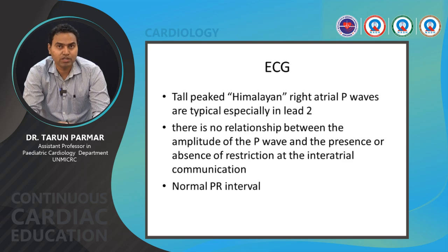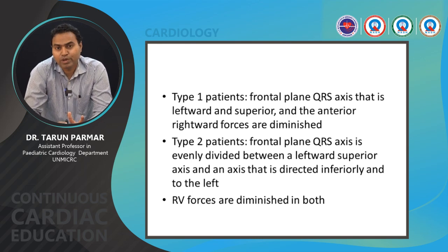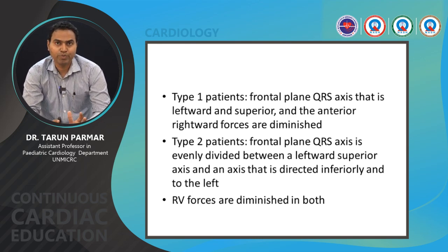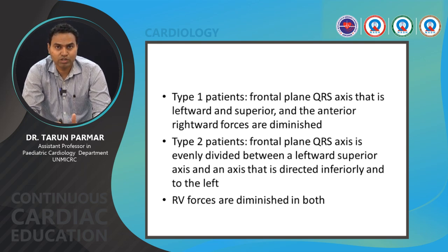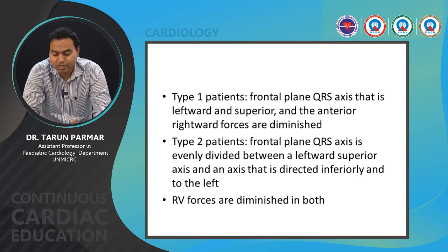On ECG, there are tall P waves (Himalayan P waves) seen mainly in lead II due to right atrial enlargement. There is no clear relationship between P-wave amplitude and the presence or absence of restriction at the interatrial communication. The PR interval is normal. In Type 1 patients, the frontal plane QRS axis shows a left and superior axis, with diminished anterior and right ventricular forces. In Type 2 patients, the QRS axis is evenly divided between a left superior axis and an axis directed inferiorly and to the left; RV forces are diminished in both conditions due to right ventricular hypoplasia.